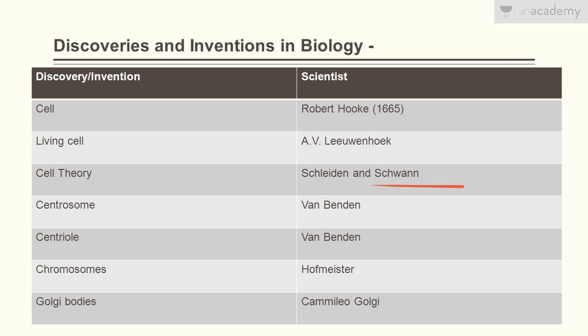Centrosome was discovered by Van Beneden. Centriole was also discovered by Van Beneden. Chromosomes were discovered by Hofmeister.